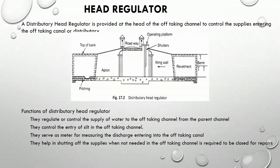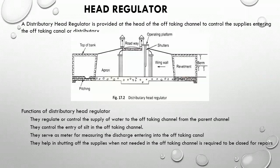A distributory head regulator is provided at the head of the off-taking channel to control the supplies entering the off-taking canal or distributory. The figure shows a typical head regulator. Its functions are: they regulate or control the supply of water to the off-taking channel from the parent channel; they control the entry of silt in the off-taking channel; they serve as meters for measuring the discharge entering the off-taking canal; and they help in shutting off supplies when the off-taking channel needs to be closed for repairs.